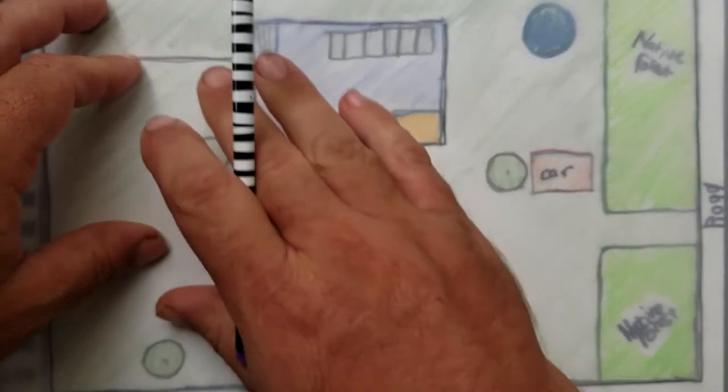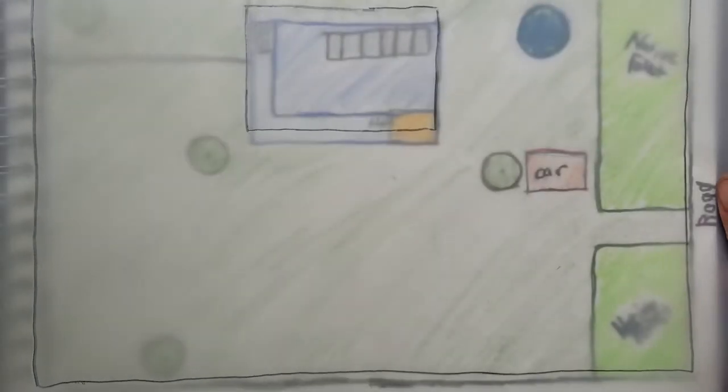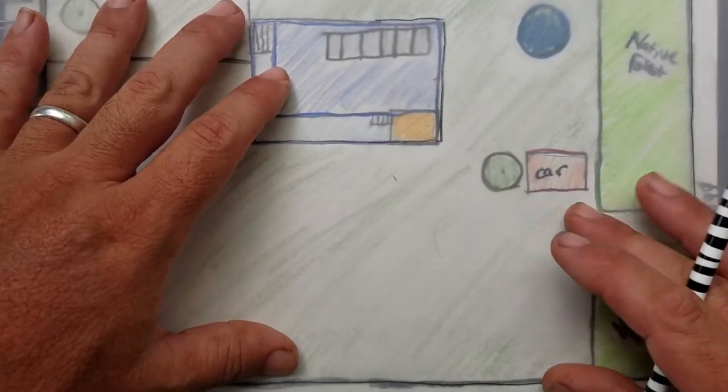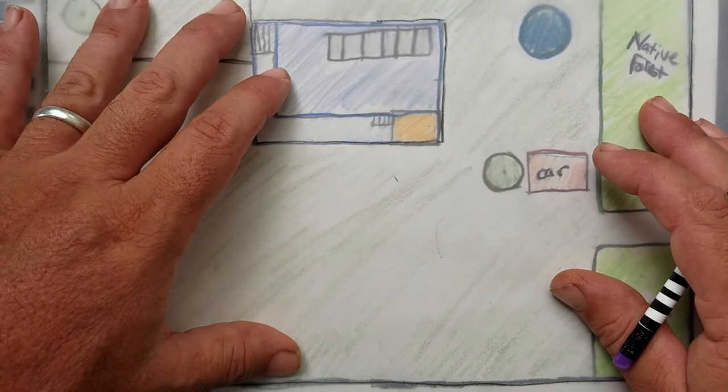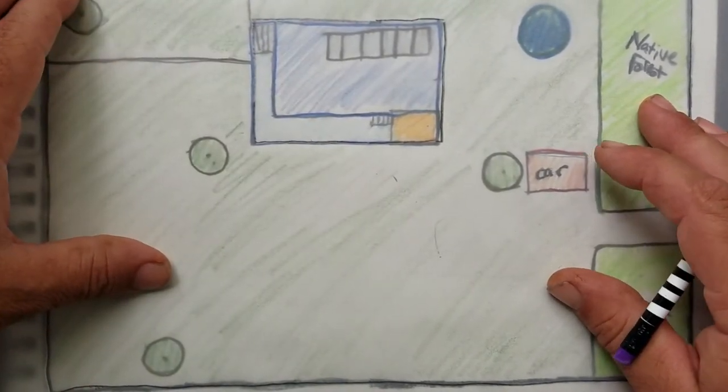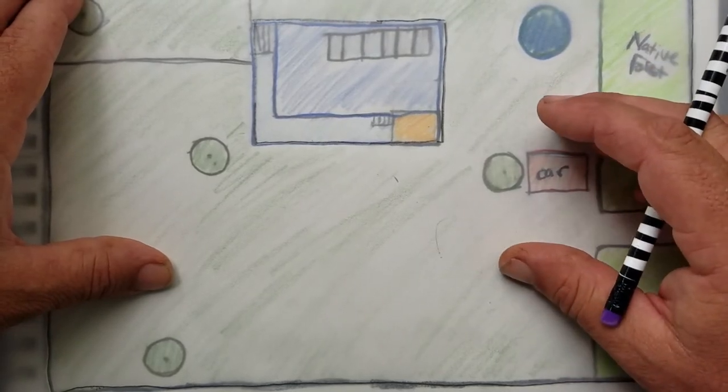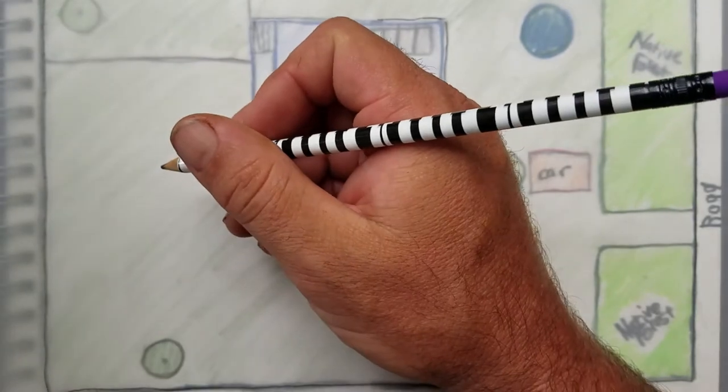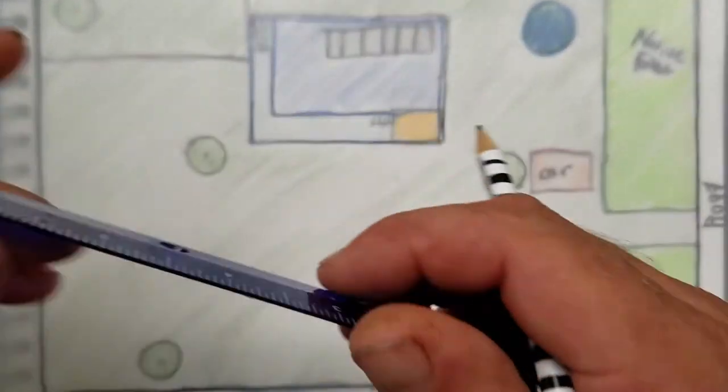And so I have another overlay here. And I've already drawn the perimeter here, and I just like to do that with each overlay so I know exactly where to place it back down on the paper. And so what we want to do is identify what's coming into the site and from where. So one thing we're going to have is the sun.